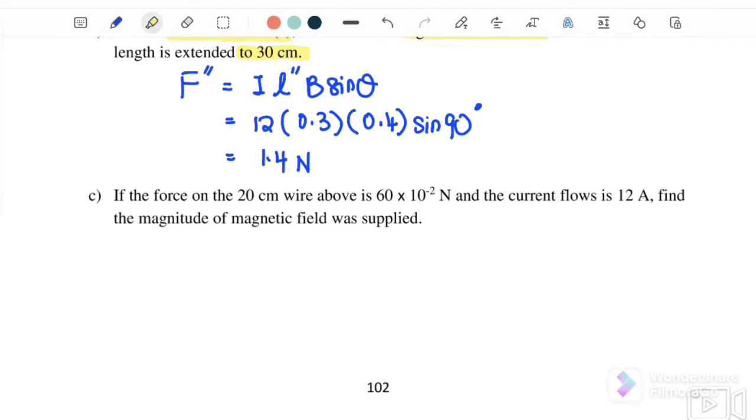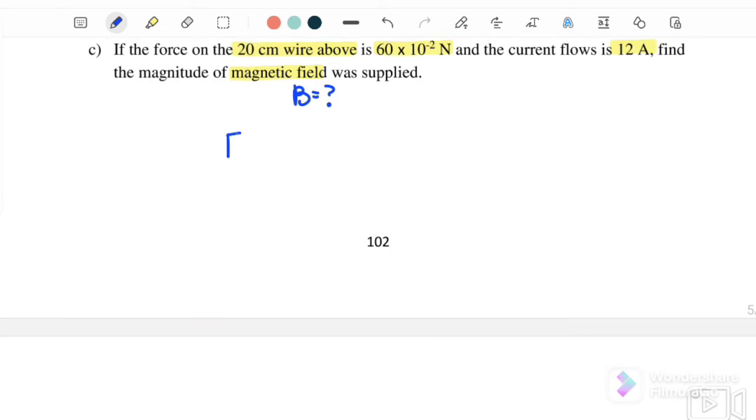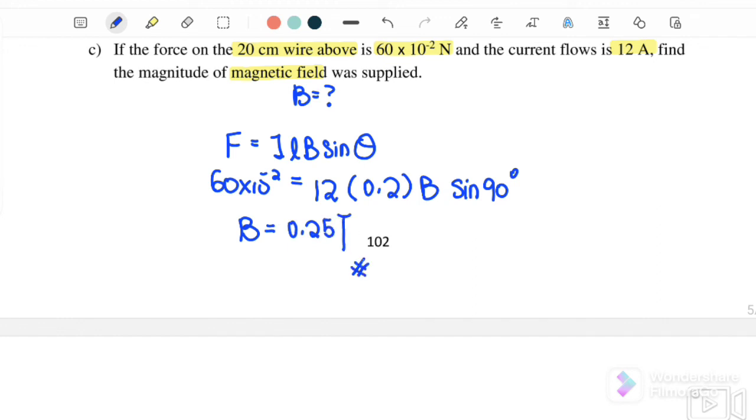If the force on 20 cm wire above is 60 times 10 to the negative 2 N and the current is 12 amperes, find the magnitude of the magnetic field was supplied. So we want to find what is the value for B. Our F equals ILB sine theta where F is 60 exponent negative 2, I is 12, L is 0.2. We need to find B sine 90 degrees. So our B here, the magnetic field, is equal to 0.25 Tesla.